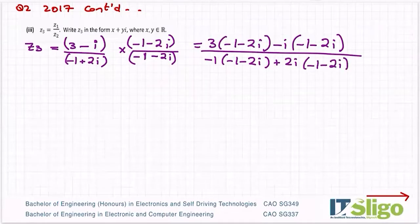Let's multiply. So three times minus one gives you minus three, three times minus two i gives you minus six i. I'm done with the three, so then minus i by minus one. Let's do the signs: minus by minus is a plus, one is the only number i.